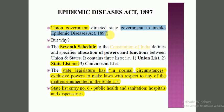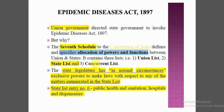The answer is provided under Schedule 7. Schedule 7 specifies and allocates powers and functions between three lists: Union List, State List, and Concurrent List. The Union List contains items for which Parliament is responsible. The State List contains items that are the responsibility of the State Legislature. The Concurrent List contains items where both Parliament and State Legislature share responsibility.